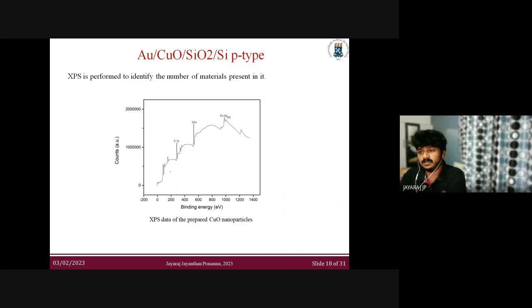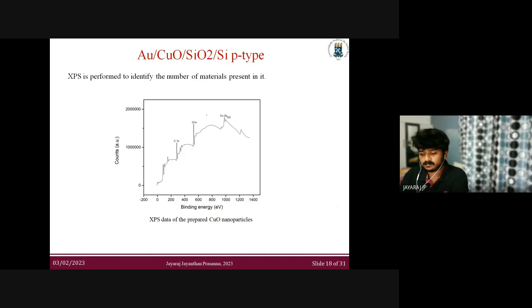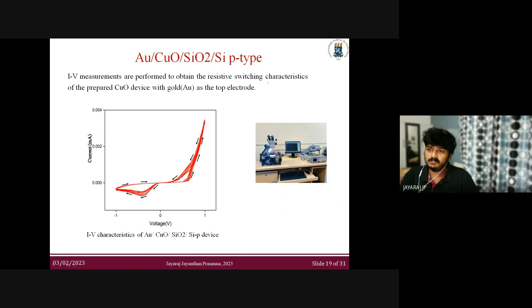This is the XPS spectrum I performed to identify the elements present. It is showing copper and oxygen peaks, though a few peaks I was not able to identify. Here are the I-V measurements I performed to obtain the resistive switching characteristics of the copper oxide device. The top electrode is gold and the bottom is silicon.